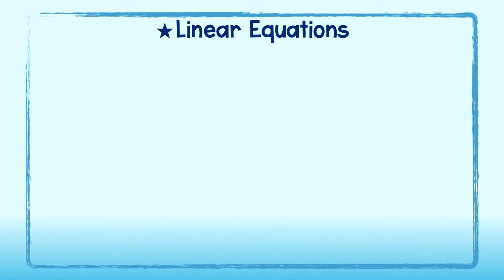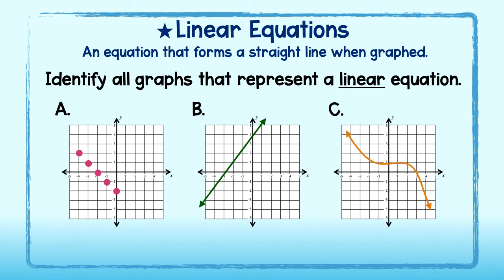Lastly, what is a linear equation? A linear equation is just an equation that forms a straight line when graphed. You'll notice that all of the graphs we encountered in this lesson were linear. Take a look at a few more. Can you identify all of the graphs that represent a linear equation? Take a moment to jot your answer down.